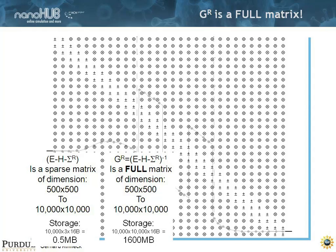Just to give you an idea, to store the Hamiltonian, it's about half a megabyte. To store a 10,000 by 10,000 matrix in complex double precision, that is roughly 1.6 gigabyte.